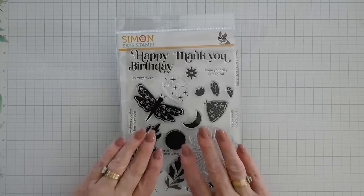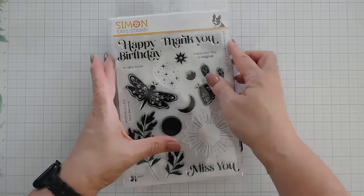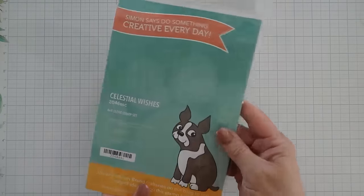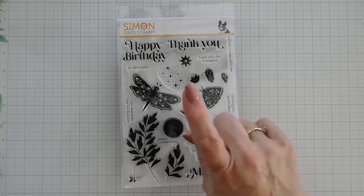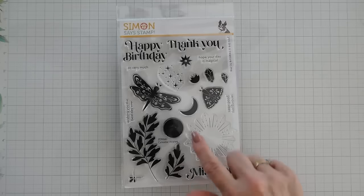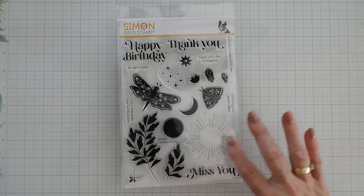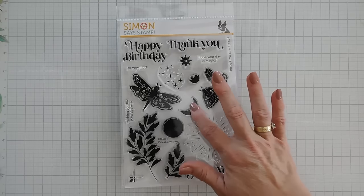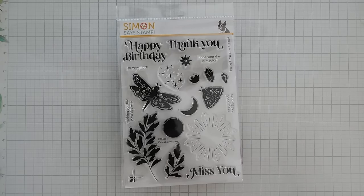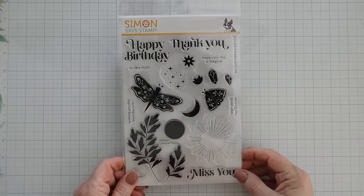This is our six by eight stamp set with the same name as our card kit, Celestial Wishes. We have some butterflies, dragonflies, some flourishes. We have some beautiful celestial images like the sun or this could be a moon or there's a half moon there. Lots of greetings and sub sentiments that go perfect with the greetings and I like that there's a variety. That's our stamp set this month.